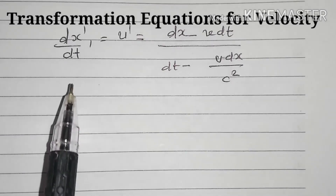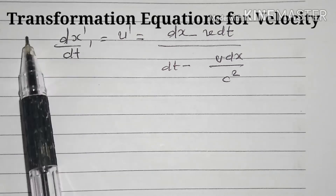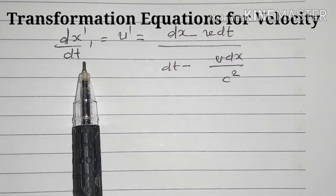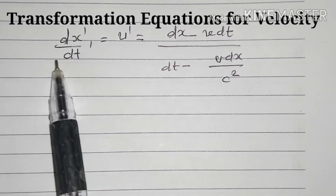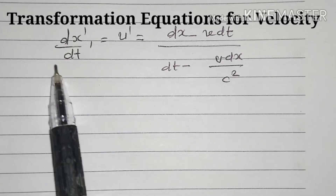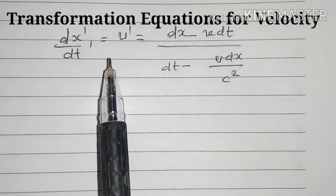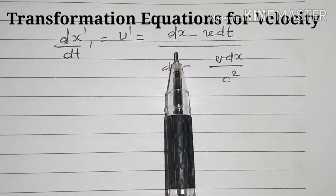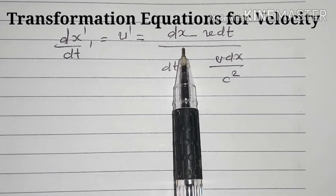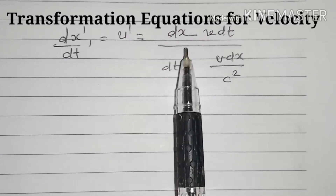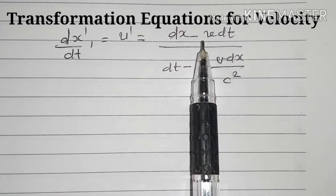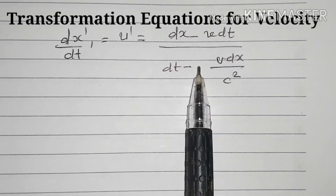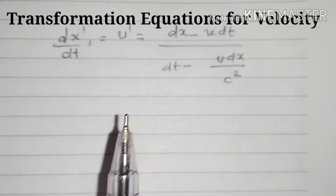When we divide the two equations, dX dash by dT dash gives the velocity in the S dash frame, which is U dash. Dividing gives: dX minus V dT, divided by dT minus V dX by C squared.